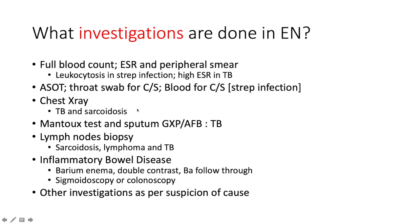Do a chest X-ray to look for TB and sarcoidosis — both granulomatous conditions. Do a Mantoux test and sputum for GeneXpert and acid-fast bacilli looking for TB. If peripheral lymph nodes are accessible, do a lymph node biopsy and send it for histopathology and TB culture, hunting for sarcoidosis, lymphoma, and TB. If inflammatory bowel disease is suspected based on dysentery, diarrhea, altered bowel habit, or abdominal pain, proceed with barium enema, double-contrast barium follow-through, sigmoidoscopy, or colonoscopy.